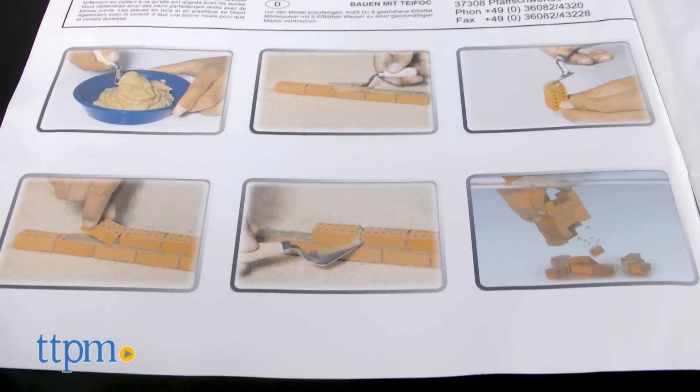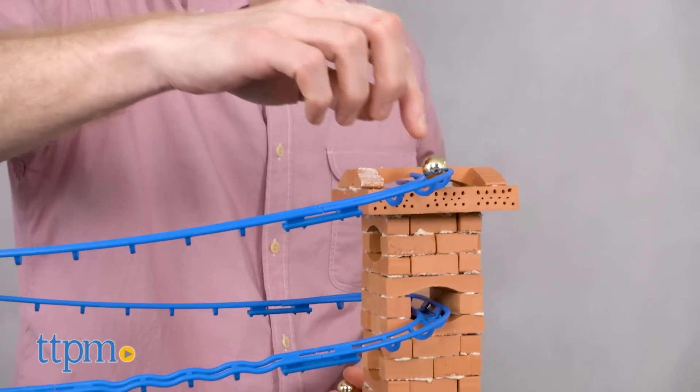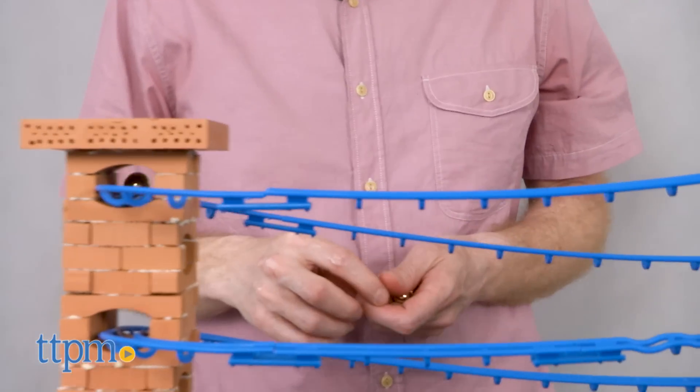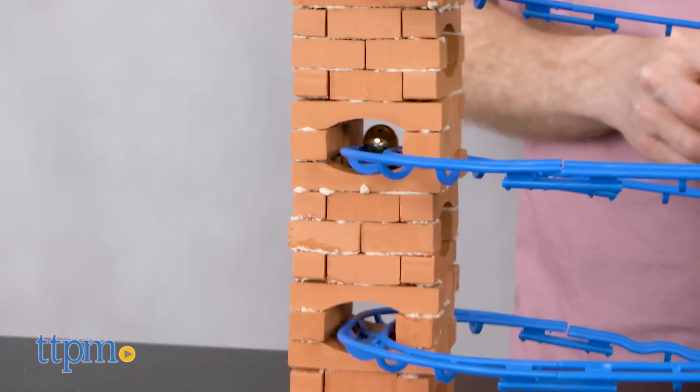There are two elements to the marble run: building the set with brick towers and plastic marble runs, and watching the marbles run and roll.